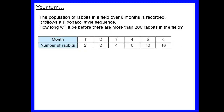A population of rabbits in a field over six months follows a Fibonacci-style sequence. Starting with 2 and 2: 2 + 2 = 4, 2 + 4 = 6, 4 + 6 = 10, 6 + 10 = 16. How long will it be before there are more than 200 rabbits? Pause the video and have a go.